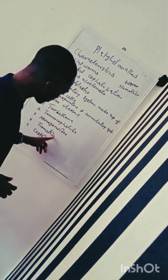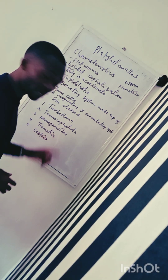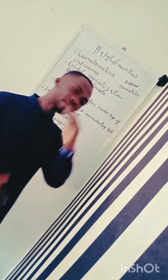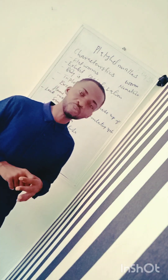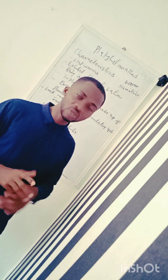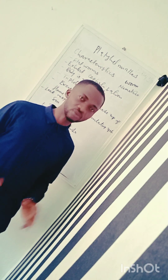Under Trematoda, that is where you see the Schistosoma and the Fasciola. We are going to look at the life cycle of these parasites one after the other. Under Cestoda, that is where you have the tapeworms — several examples including Taenia solium, Taenia saginata, Hymenolepis nana, Diphyllobothrium latum, Spirometra sp., and Echinococcus granulosus, and so on.